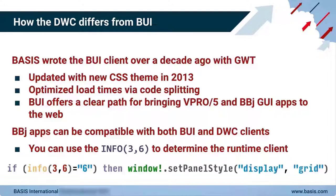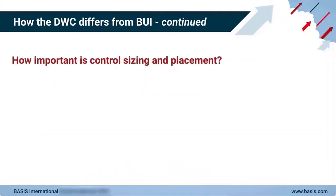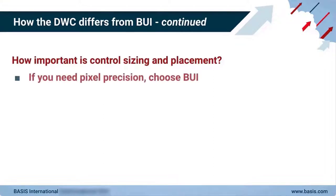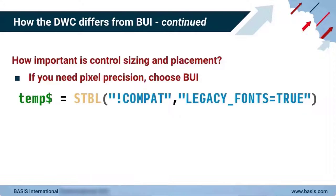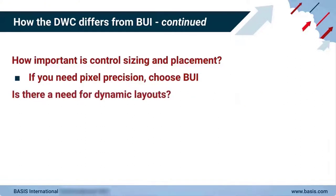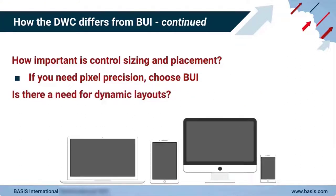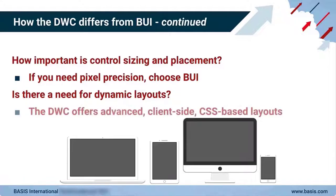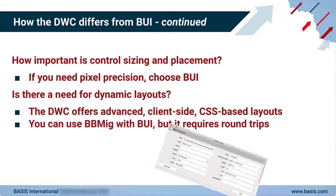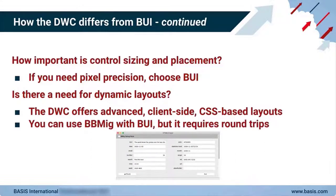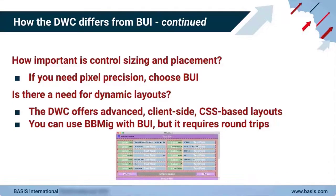If you are targeting a single client, the answer depends on several factors. How important is control sizing and placement? If you require precise pixel fidelity, then BUI is the simple choice, but the DWC may still be an option if you set a global string table entry to force it to use the same font sizes as BUI. Is there a need for dynamic layouts? If your customers expect to run the app on a variety of screen sizes, then the DWC is the best choice, though the BBMIG layout manager in BUI will require round trips between the client and server on resize.